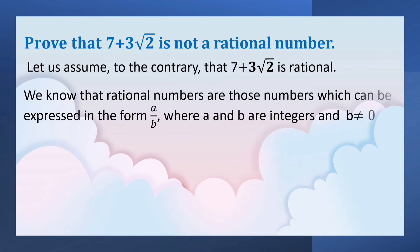We know that rational numbers are those numbers which can be expressed in the form a by b, where a and b are integers and b is not equal to 0.